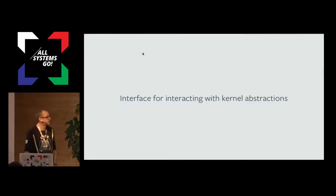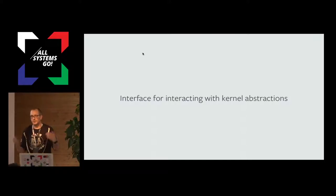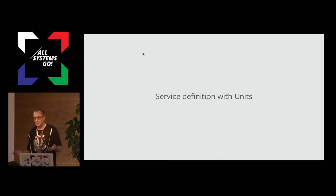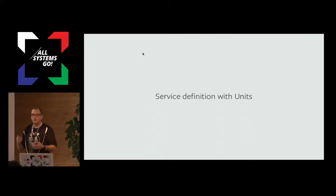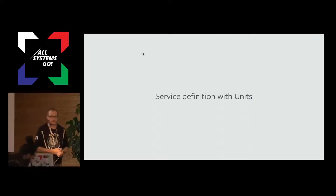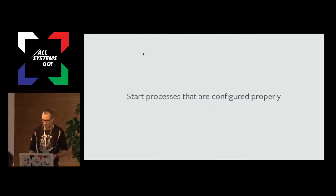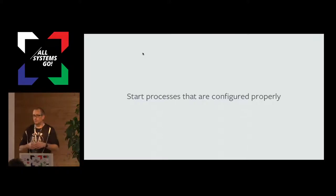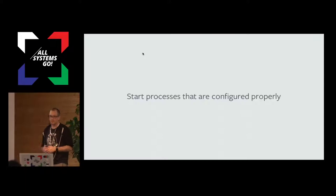So, enter systemd inside the container. This is an interface for interacting with kernel abstractions — we really like it because it allows us to start processes with all the properties we want via the D-Bus API. We get service definition with unit files, which gives us a clean interface and API that users can write to. They can define their services in a way that we can parse, validate, test, and ensure consistency. We can start processes that are configured properly — right cgroup slice, right cgroup limits — nearly atomically with a single D-Bus API call.